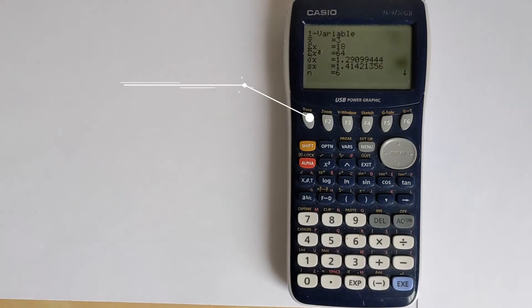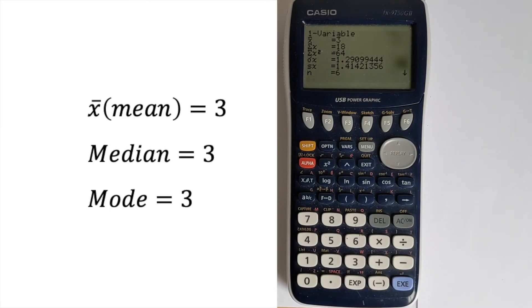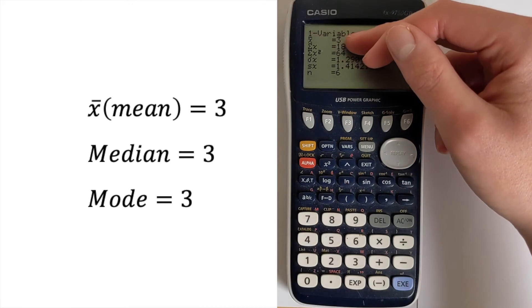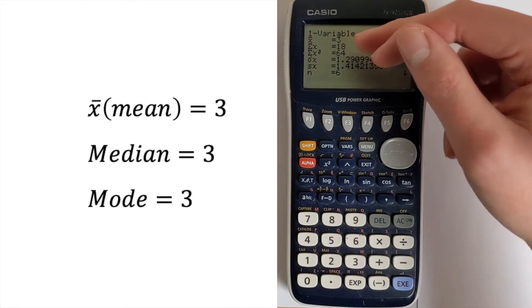So we press 1-VAR, and we get loads of different calculations. The first one that's useful for us is the X bar, which means mean. So the mean is 3.